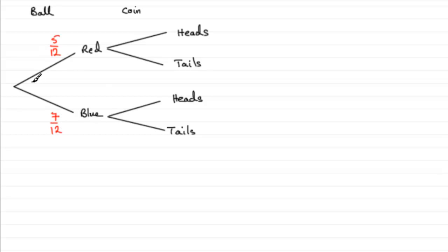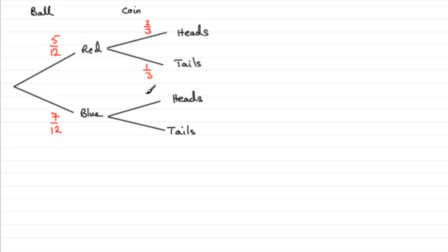Now if we took a red ball, we're told that we spin a biased coin and the probability of getting a head would be 2 thirds, so the probability of getting tails would be 1 third. And if we drew a blue ball and spin the coin, this time it's a fair coin, so the probability of getting a head would be a half and the probability of getting tails would also be a half.